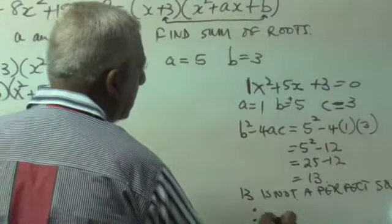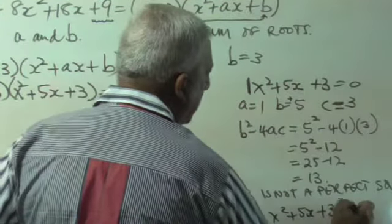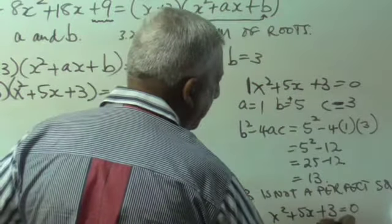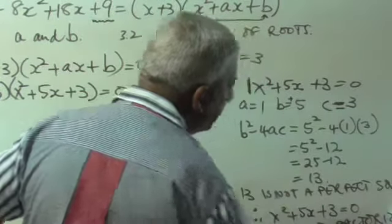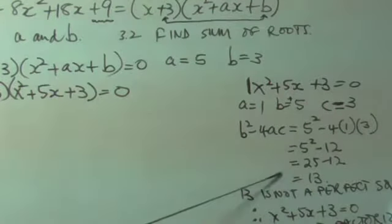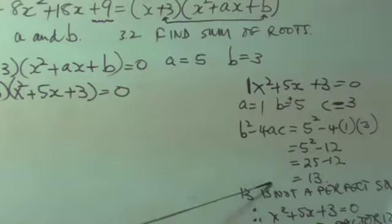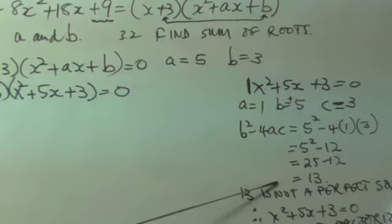Therefore, x squared plus 5x plus 3 equal to 0 will not factorize. If this answer is a perfect square, the quadratic will factorize. If this answer is not a perfect square, the quadratic will not factorize. This is not a perfect square.